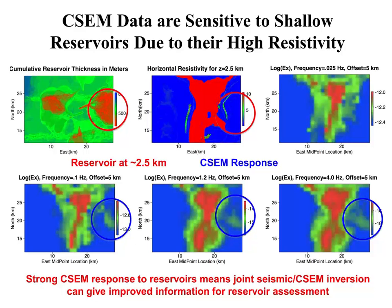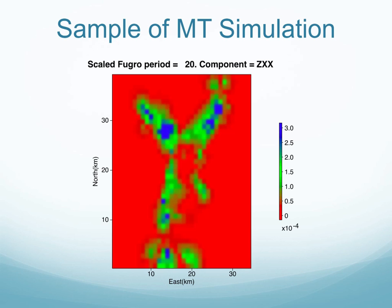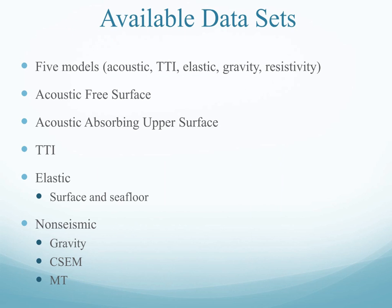Here is a shot of the MT simulation — data done by CGG for a period of 20 seconds. We did 20 periods ranging from 1 second to 1,000 seconds. This is the XX component of the MT response. Available data sets are now available, and there are data for five different models: acoustic, TTI, elastic, gravity, and resistivity. You can get one or all of them.